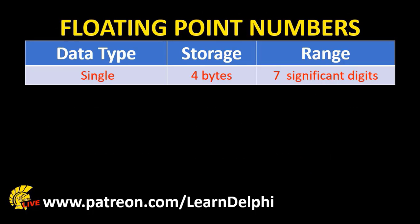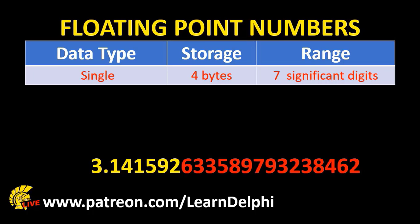Now let's go back to the single data type. A single has 7 significant digits before and after the decimal point. Now it makes sense why it is called a floating point number. So if pi is a single, only the first 7 digits will be stored.